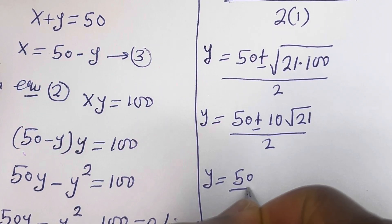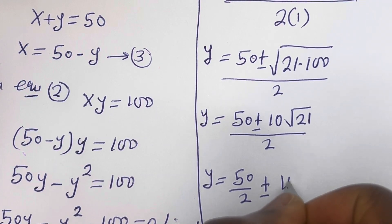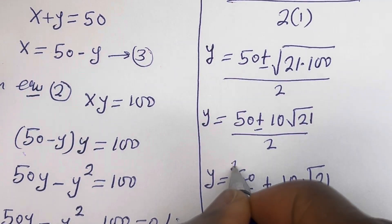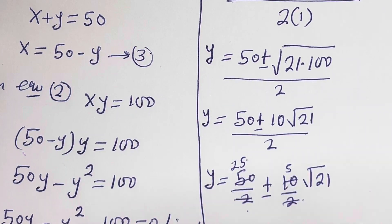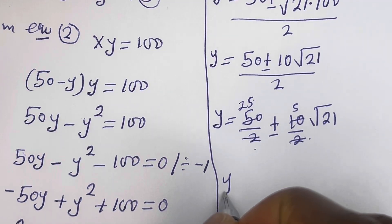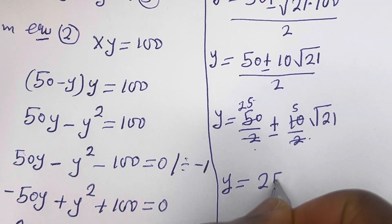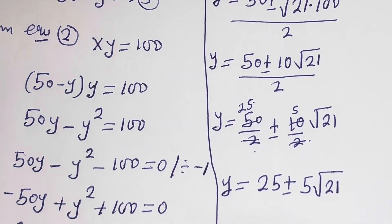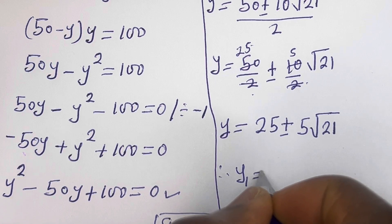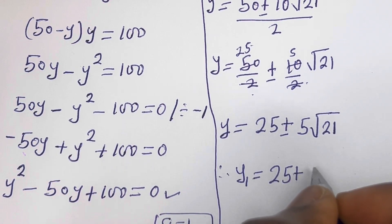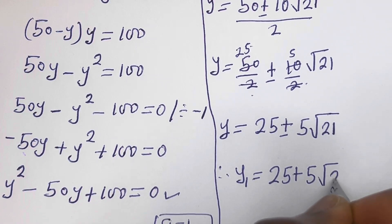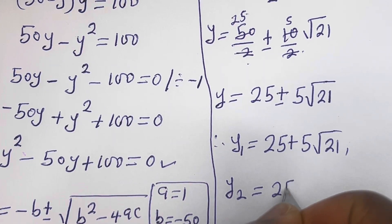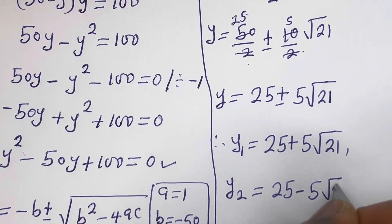y is equal to 50 over 2 plus or minus 10 over 2 times the square root of 21. Simplifying: y is equal to 25 plus or minus 5 square root of 21. Therefore, y1 is equal to 25 plus 5 square root of 21, and y2 is equal to 25 minus 5 square root of 21.